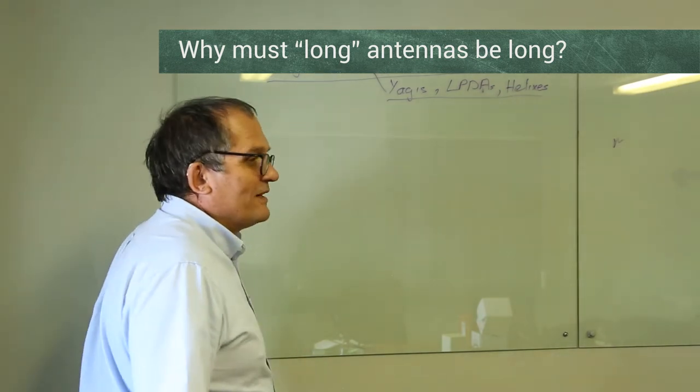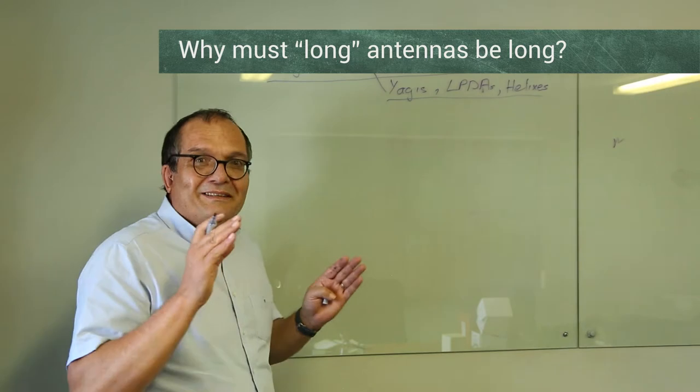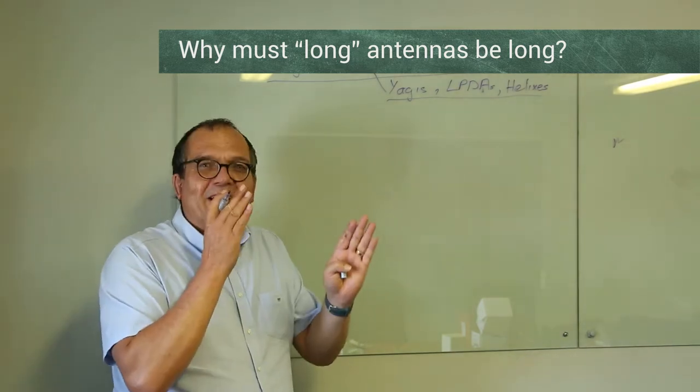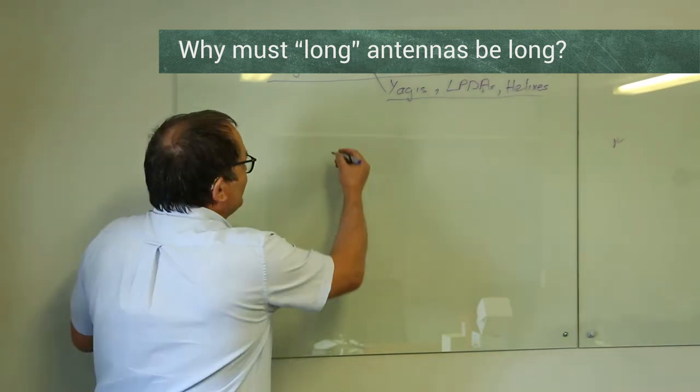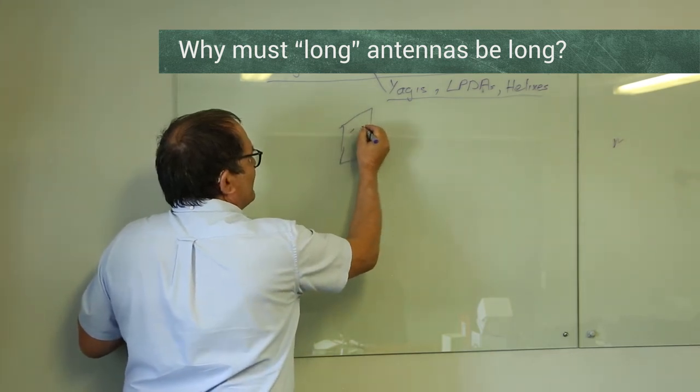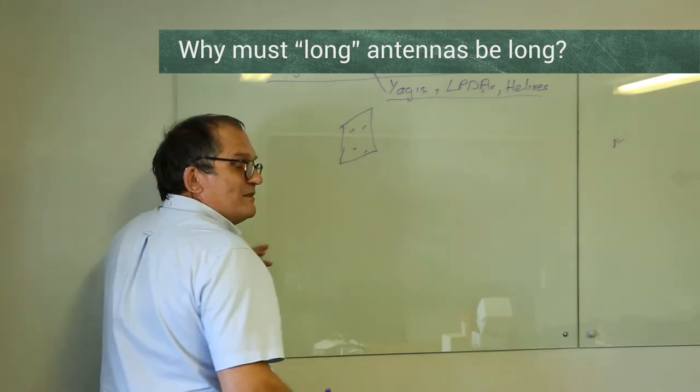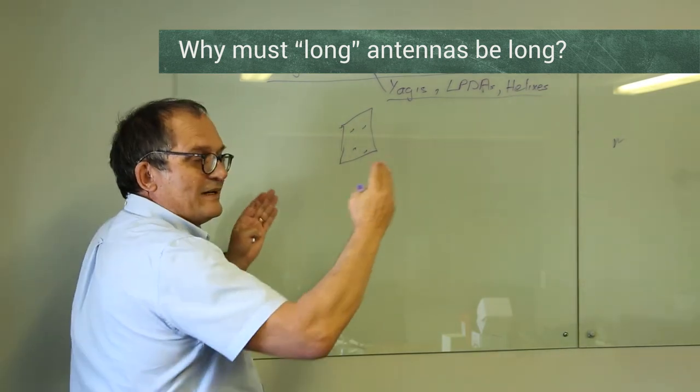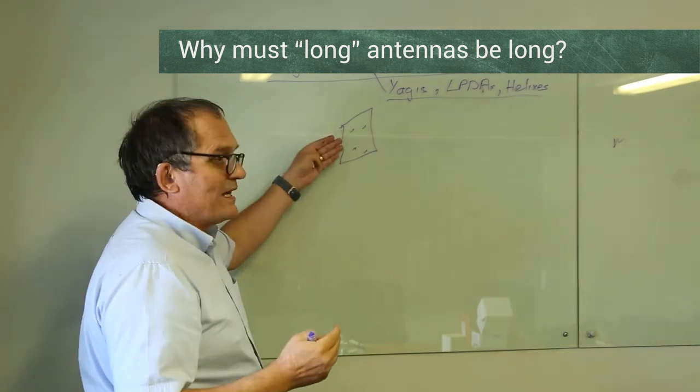Long antennas are technically known as end fire arrays. Let me first explain - you get long antennas and then you get flat antennas. Flat antennas typically are arrays. They look like this and they may have many elements here. You first need to understand this one. Flat antennas - the area, the bigger the area, the bigger the gain.